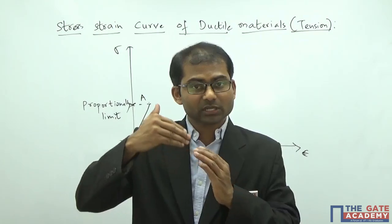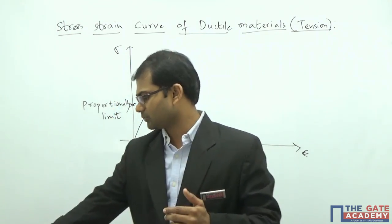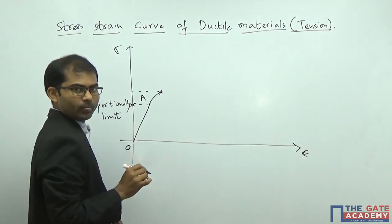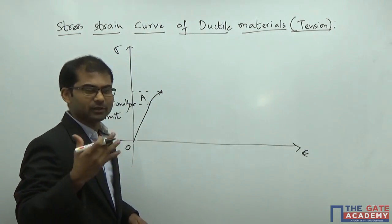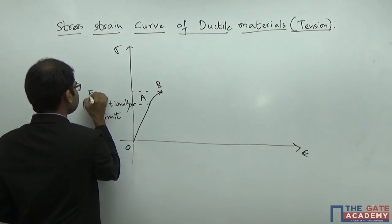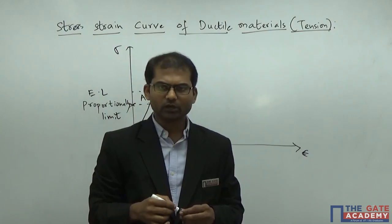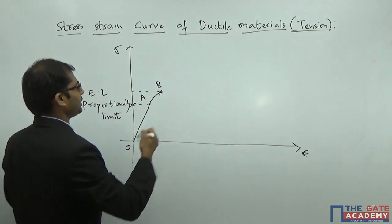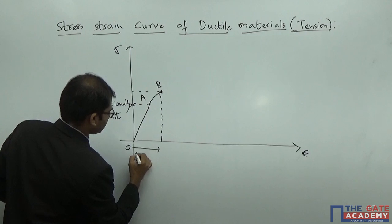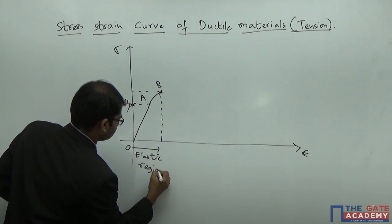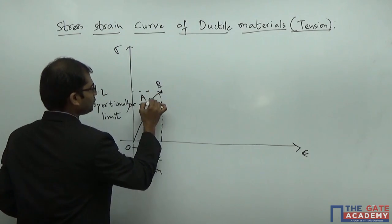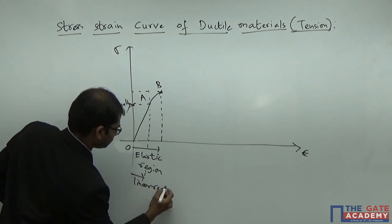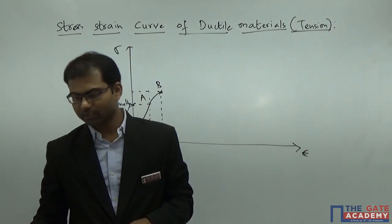After point A, if you increase the load further, the curve becomes slightly non-linear but the material remains elastic. Elasticity lasts up to point B, called the elastic limit. The region O to B is called the elastic region. The region O to A (where stress and strain are linearly proportional) is called the linear region. So the elastic region extends to point B, while the linear region extends only to point A.